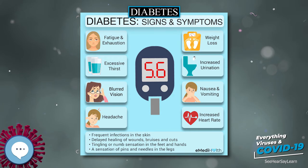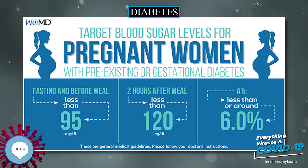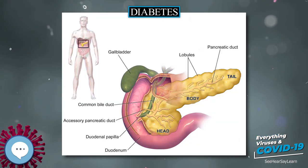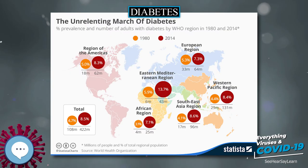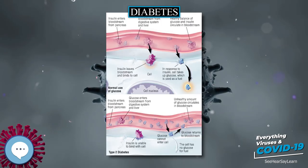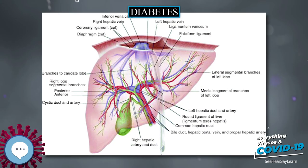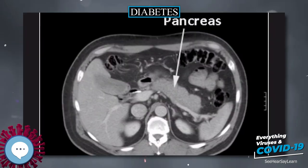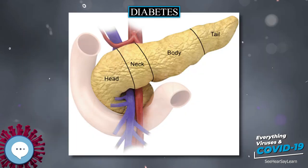Maturity onset diabetes of the young (MODY) is a rare autosomal dominant inherited form of diabetes, due to one of several single gene mutations causing defects in insulin production. It is significantly less common than the three main types, constituting 1–2% of all cases. Being due to a defective gene, this disease varies in age of presentation and in severity according to the specific gene defect; thus there are at least 13 subtypes of MODY. People with MODY often can control it without using insulin.